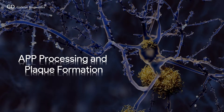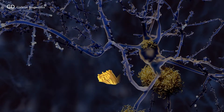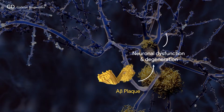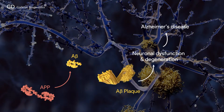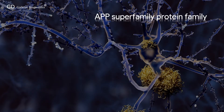Excess amyloid beta peptide is believed to be a main contributor to the dysfunction and degeneration of neurons that occurs in Alzheimer's disease. Abeta is a 38 to 43 amino acid peptide that is derived from the beta amyloid precursor protein, APP. APP belongs to a larger evolutionarily conserved APP superfamily protein family.